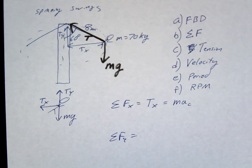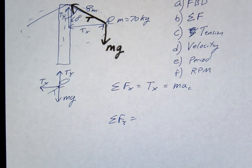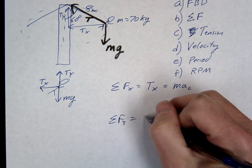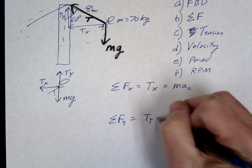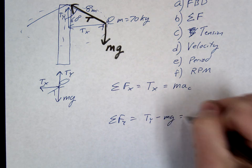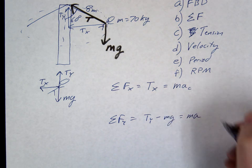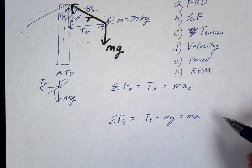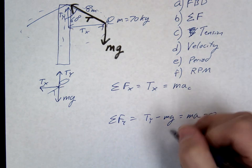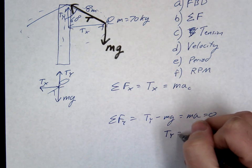In the y direction, we have Ty minus mg equals Ma. Do you know anything about this A? Zero. Okay, and so we're left with Ty should just be mg.